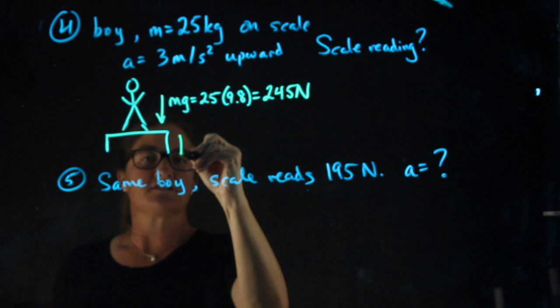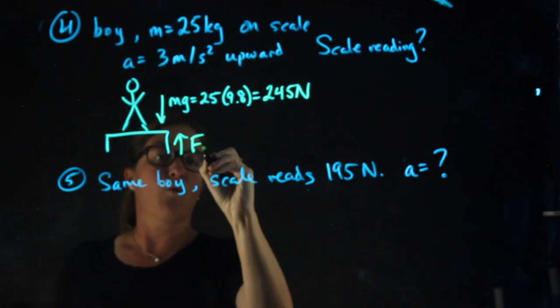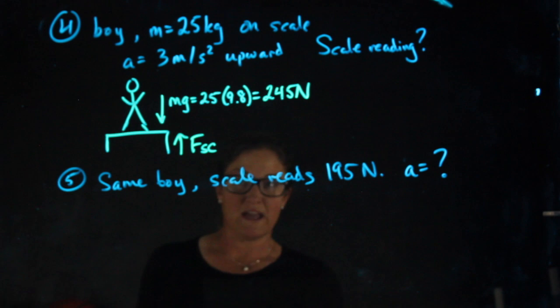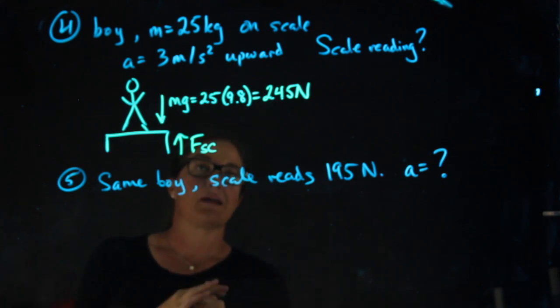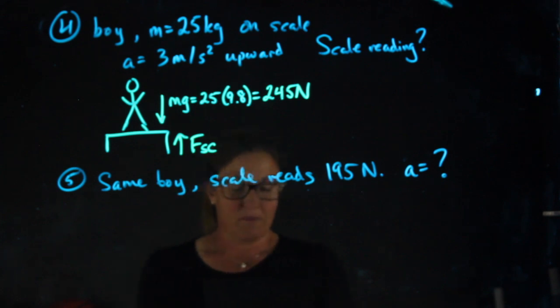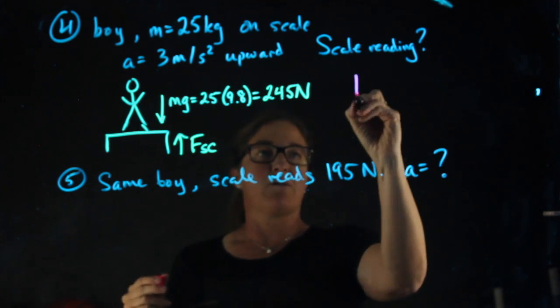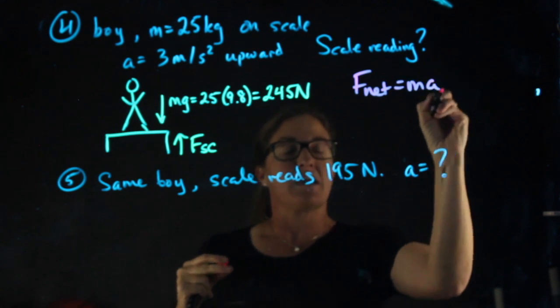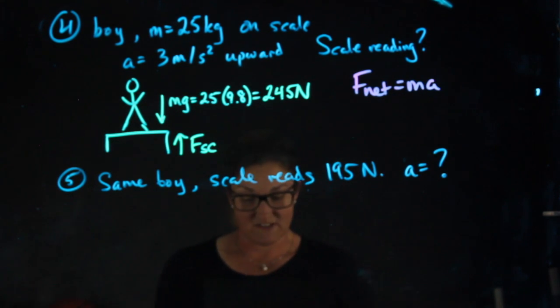The upward force is what I call the force of the scale, or what the scale reads. Now I approach this the same as any other vertical force problem. That is, I'm thinking about F net equals ma, and I'm thinking about which force is greater, which force is smaller.